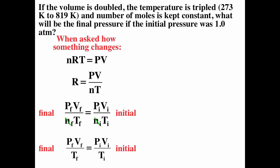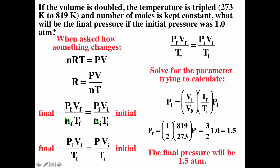A harder example: if the volume is doubled, the temperature is tripled, and the number of moles is constant, what is the final pressure? Since N is constant, we solve for P_final = (V_initial/V_final) × (T_final/T_initial) × P_initial. The volume doubled gives V_initial/V_final = 1/2. T_final = 819 K, T_initial = 273 K, giving T_final/T_initial = 3. So P_final = 3/2 × P_initial = 1.5 atmospheres.